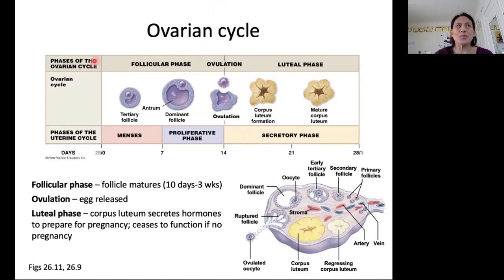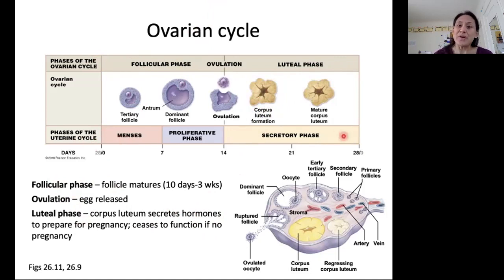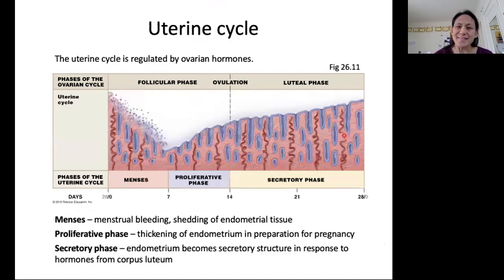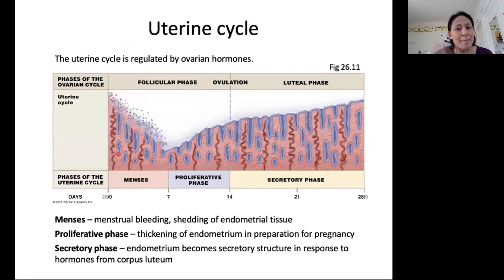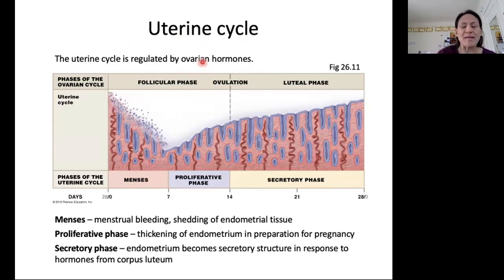You can see the events of the ovarian cycle lined up with the events of the uterine cycle. The first thing to note about the uterine cycle is that the events happening there are in response to hormones that are being secreted by the ovaries, and we're going to look at that in greater detail later.